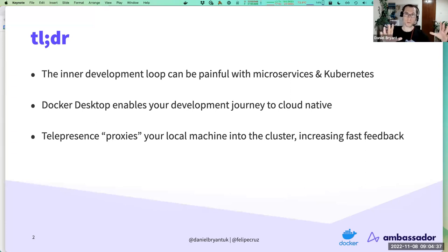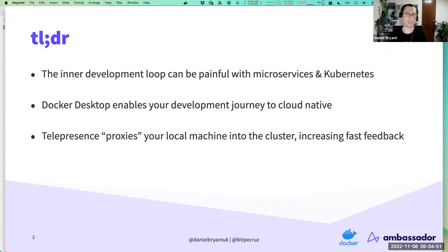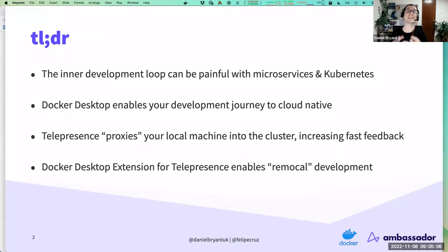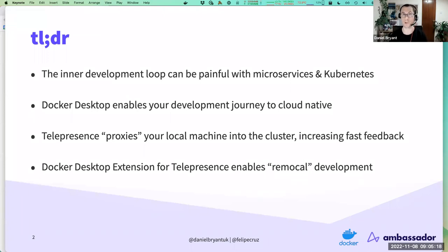We're also going to focus on Telepresence — an open source CNCF tool donated by Ambassador Labs. Telepresence proxies your local machine into the cluster, giving you that fast feedback loop. When you go to developing on a remote cluster, getting fast feedback is quite tricky without a tool like Telepresence. The Docker Desktop extension makes it even easier — if you're not super comfortable on the CLI, you can work with it right from Docker Desktop.